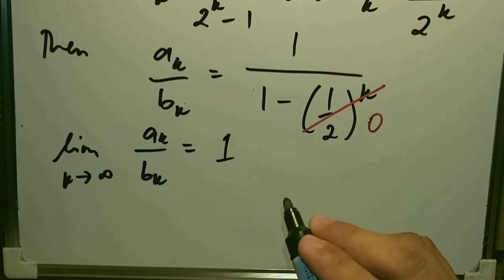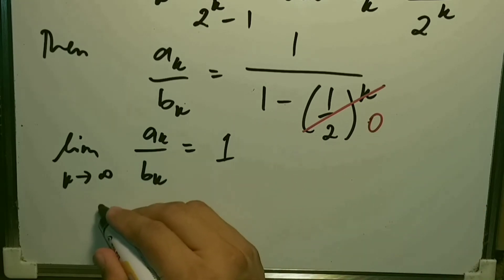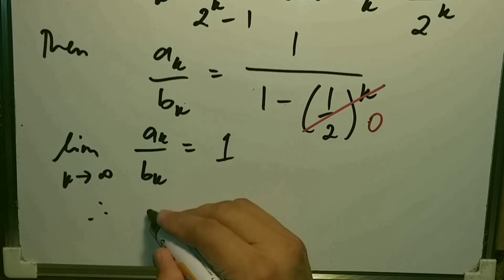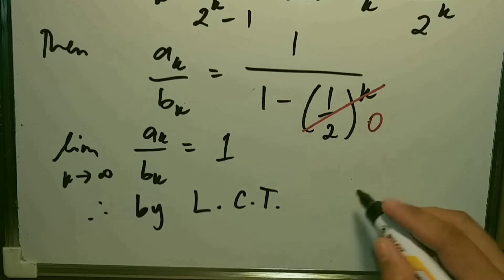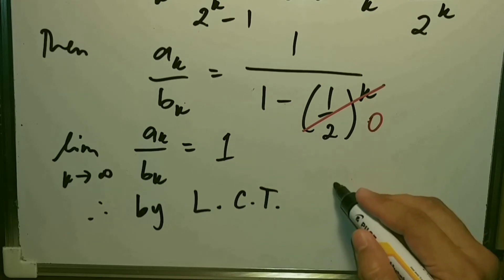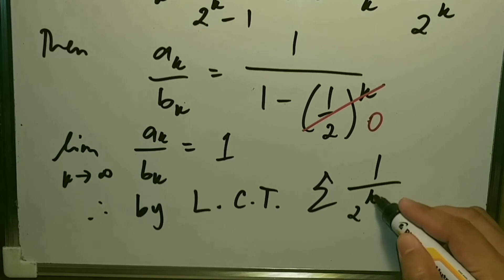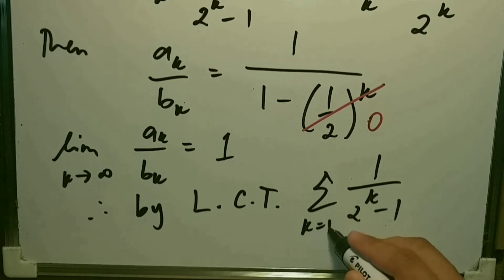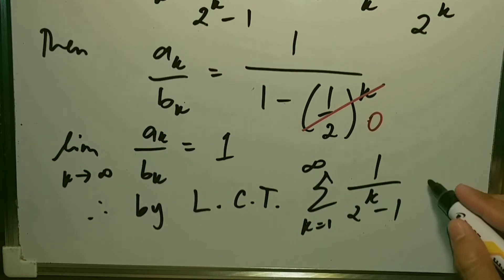By the limit comparison test, the summation of 1/(2^k − 1) from k=1 to infinity converges.